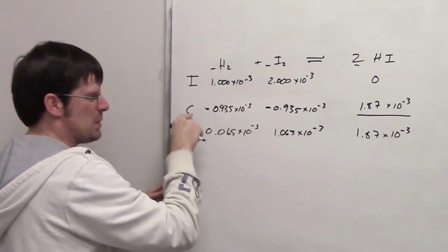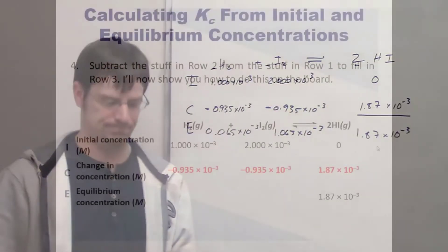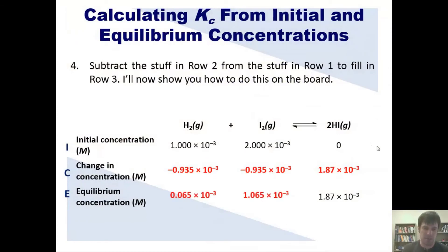Isn't an ICE table wonderful? I've got my initial concentration, my change in concentration, and my concentrations at equilibrium. We then should get these numbers to fill in the blanks.